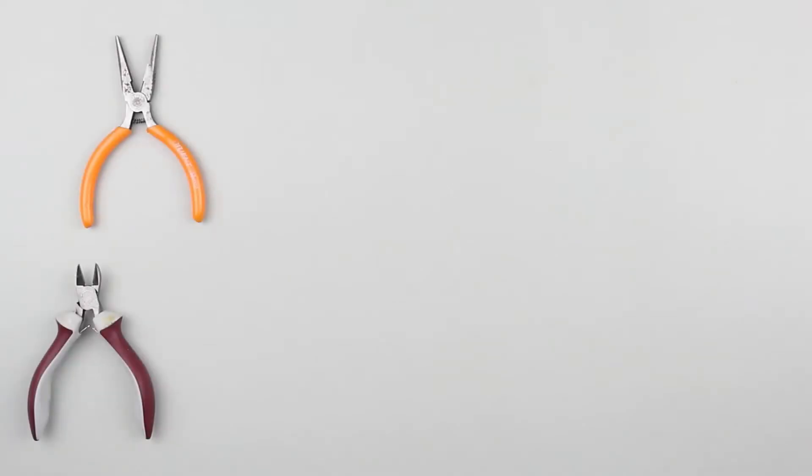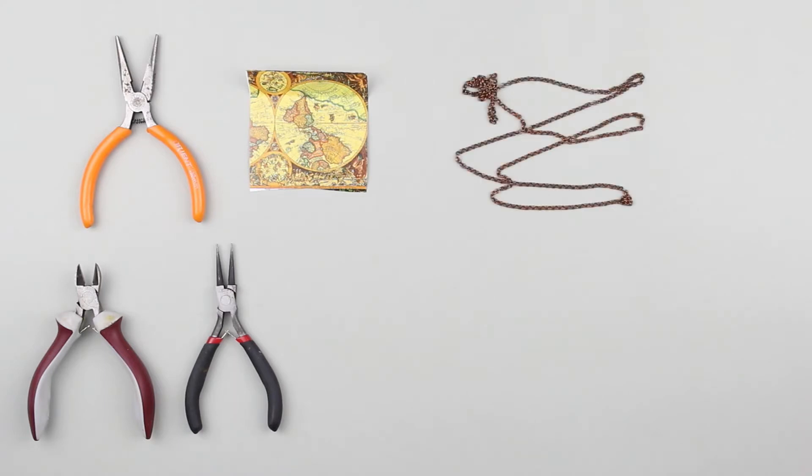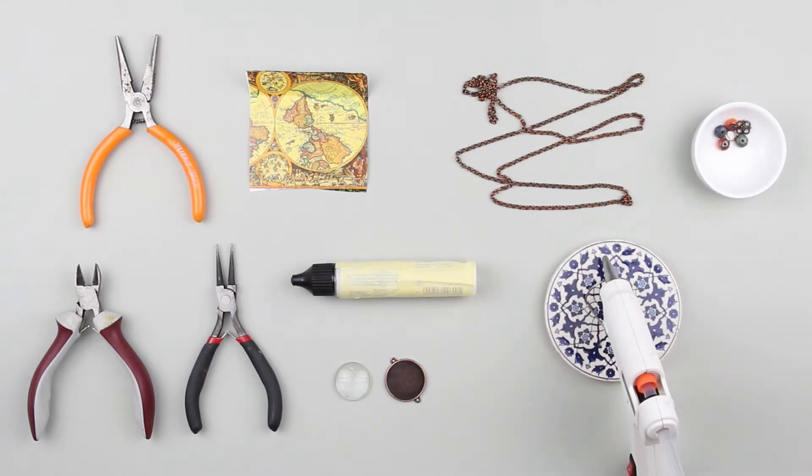We need flat pliers, cutting pliers, round nose pliers, a geographical map image, chain, round glass and a metal tray, glue for the glass, a hot glue gun, and beads.